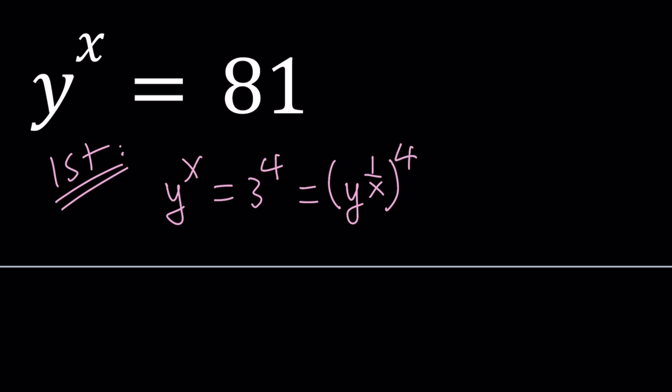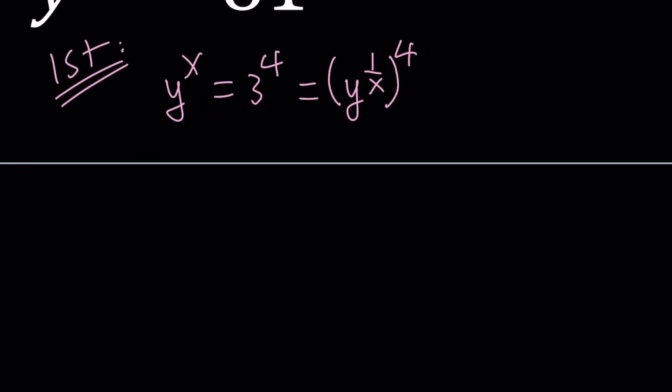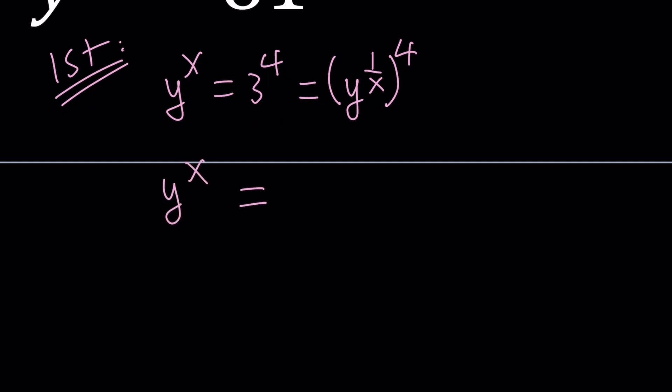From here we get something interesting. We have y to the x on the left, and on the right hand side we have y to the power 4 over x, because when you have superpowers, you multiply the exponents. From here, we can say that x is equal to 4 over x, which means x squared is equal to 4.